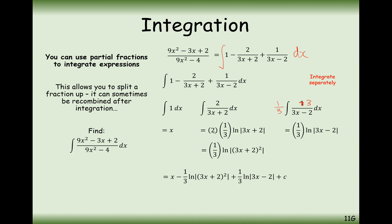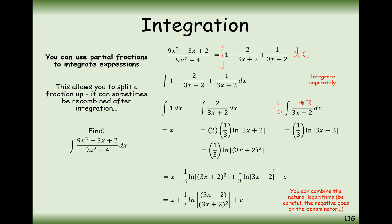Notice how the 2 has crept inside the brackets of the ln as a power. Maybe we might want to combine the two logarithms here. Remember that the plus term ends up on the top of the fraction, and the negative ln component ends up on the bottom of the fraction.